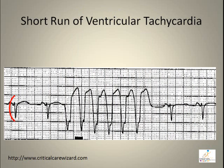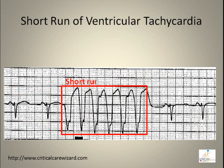Three or more PVCs in a row is called a run of ventricular tachycardia.